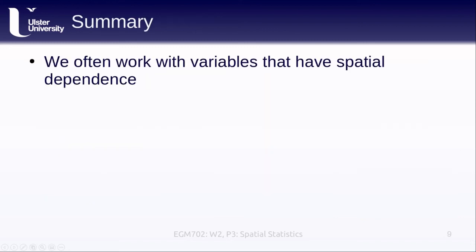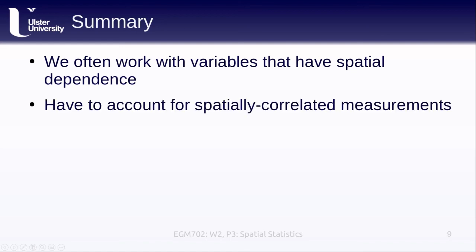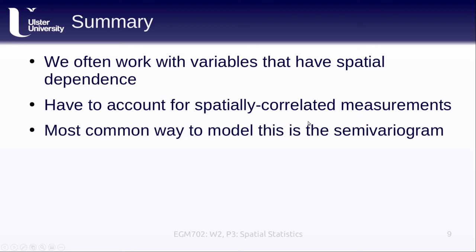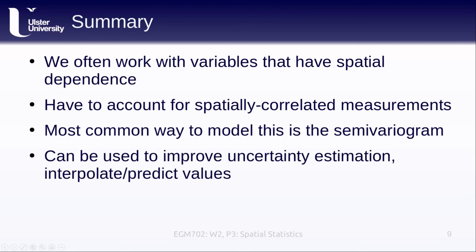To summarize: we're often working with variables that have spatial dependence, which means we must account for spatial correlation in our measurements — especially when aggregating them into areas or volumes. Otherwise, we end up underestimating the uncertainty. The most common approach is the semivariogram, which improves uncertainty estimation and enables interpolation at unsampled points. Importantly, Kriging also gives us an estimate of the uncertainty in our predicted values, which other interpolation methods don't provide.